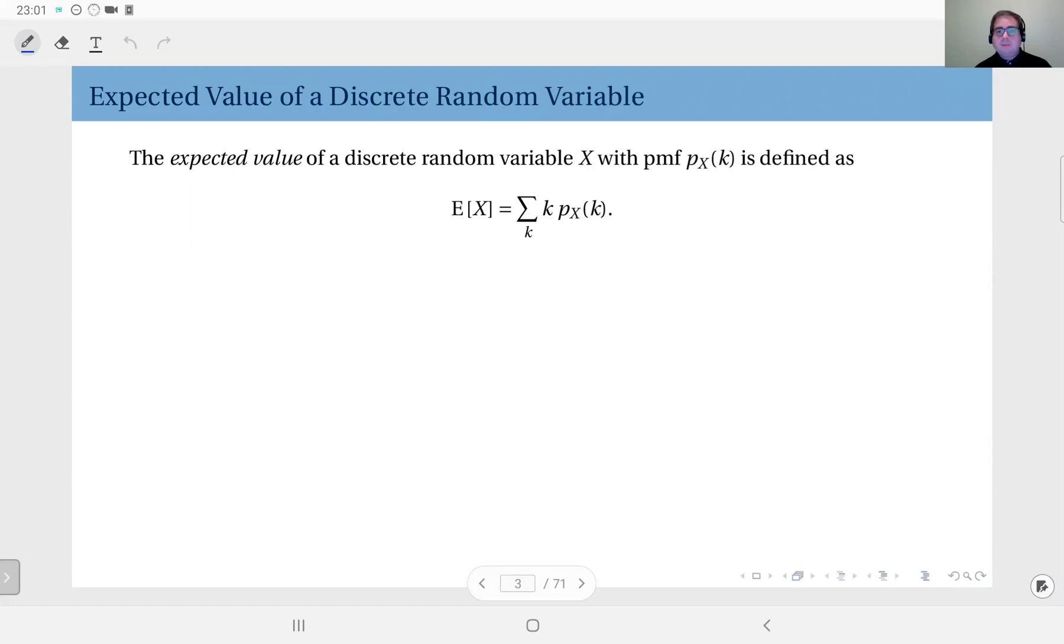It's a weighted sum of the possible outcomes, weighted by their corresponding probabilities. Sometimes the expected value is also called the mean, and by notation, in addition to this notation here, we also sometimes see m_X or μ_X in some resources.